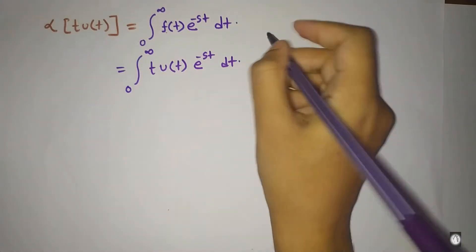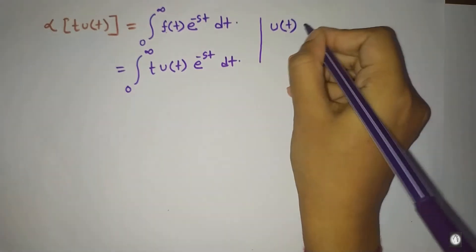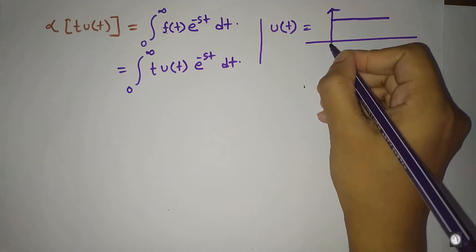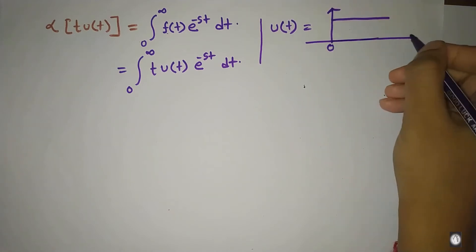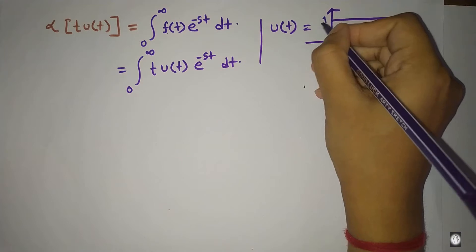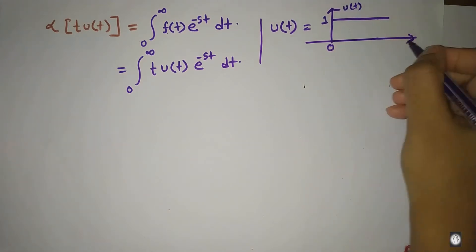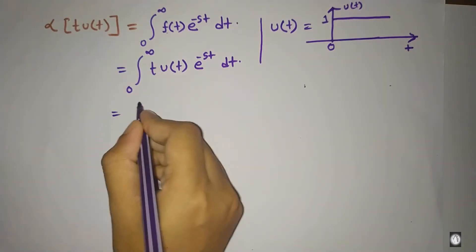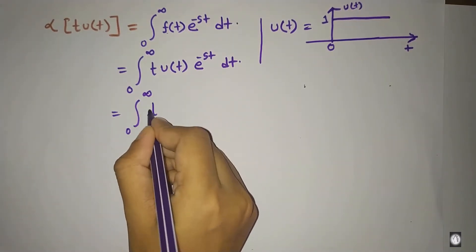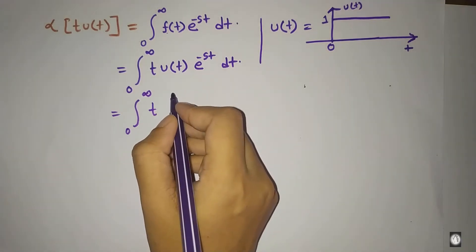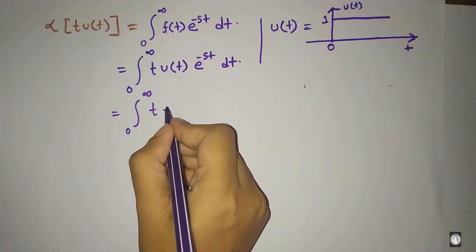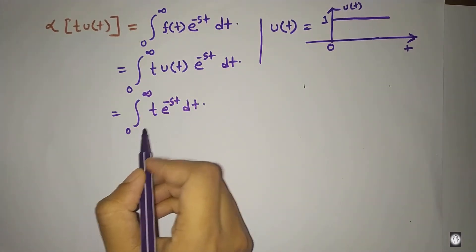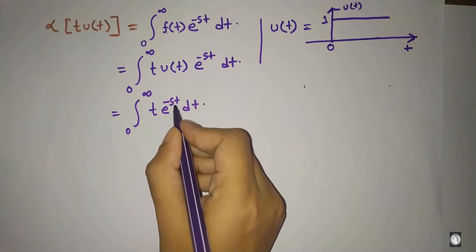Here u(t) is the unit step function. We will draw the unit step function: for t equal to 0 to infinity, u(t) equals 1. So the integral becomes the integral from 0 to infinity of t·u(t)·e^(-st) dt, where u(t) is taken as one part and e^(-st) dt as the other.